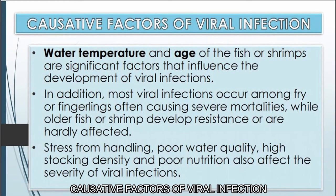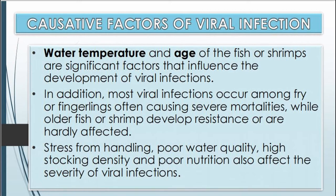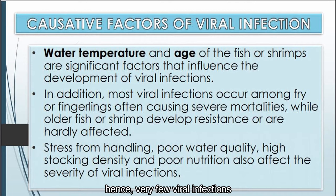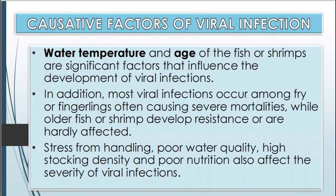What are the causative factors of viral infection? First, water temperature and age of the fish or shrimps are significant factors influencing the development of viral infection. Most fish viral infections occur at low water temperatures; hence, very few viral infections among fishes in warm water culture systems are reported. In addition, most viral infections occur among fry or fingerlings, often causing severe mortalities, while older fish or shrimp develop resistance or are hardly affected.